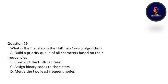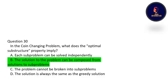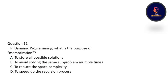What is the first step in the Huffman coding algorithm? The first step is to build a priority queue of all characters based on their frequencies — option A is correct. In the coin changing problem, what does the optimal substructure property imply? Optimal substructure means the solution to the problem can be composed from solutions to the subproblems — option B is correct. In DP, what is the purpose of memoization? To avoid solving the same subproblems multiple times — option B is correct.